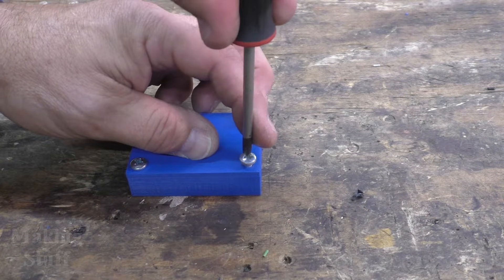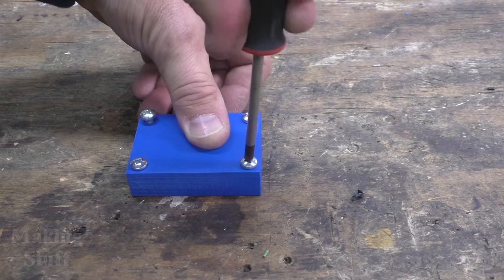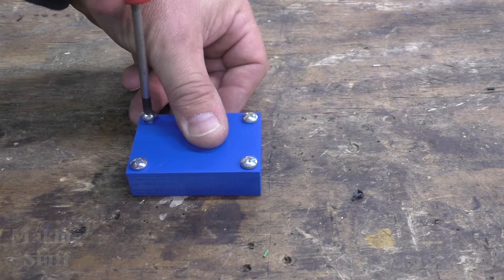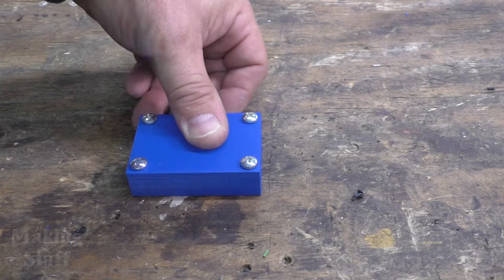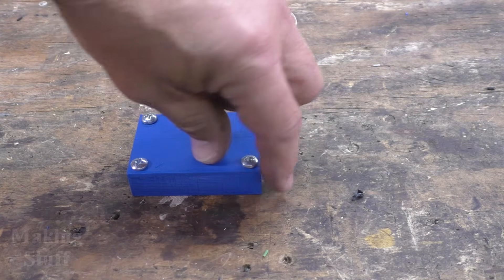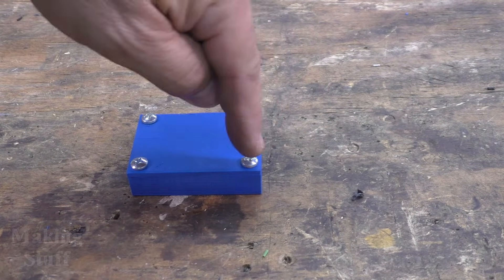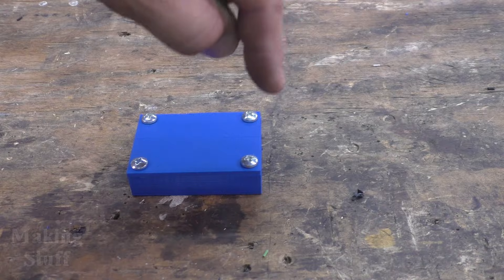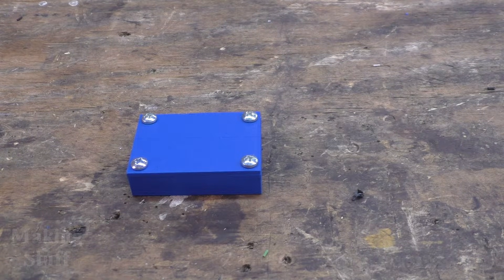Now, if it didn't line up, say one of those threaded inserts went in a little crooked, all I would have to do is take the soldering iron, put it back down in that insert, and let it get hot enough to soften the plastic up. And then I can move it around and get it aligned to the way that it needs to be.